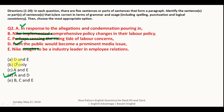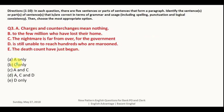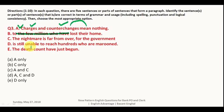Question number three. Part A — 'charges and counter charges mean nothing' — we are discussing two nouns, so this is correctly followed by 'mean,' not 'means,' making this sentence correct. Part B — 'to the few millions' — 'few' is countable so it should be 'millions,' making this wrong. Part C — 'the nightmare is far from over for the government' — is correct. Part D — 'it is still unable to reach 100 who are' — is also correct. Part E — 'the death count has' — it should be 'has,' so this is wrong. A, C, and D are correct, so your answer is D.